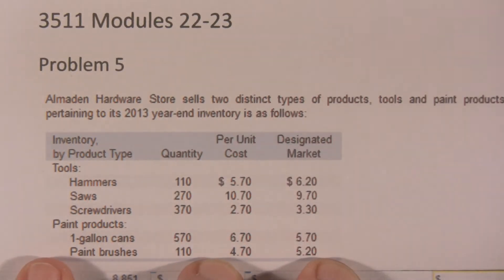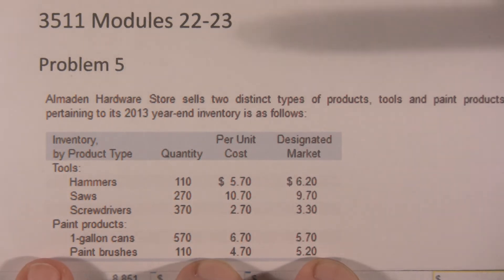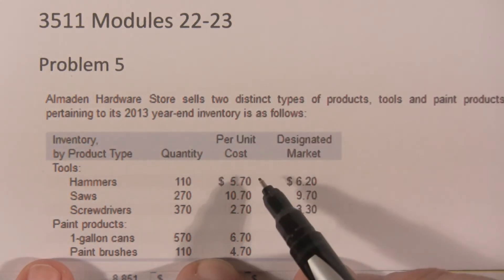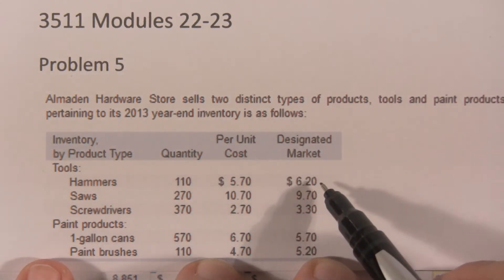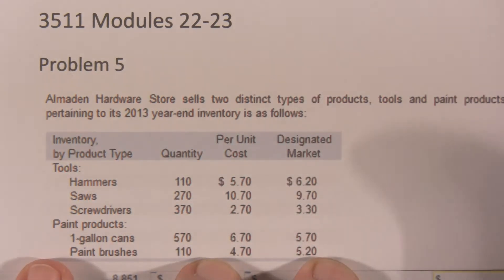This is a lower of cost or market problem, but it's a little different. In this case, there is no ceiling or floor given. We're just told to compare the unit cost with the designated market cost. So that's what we're going to do.